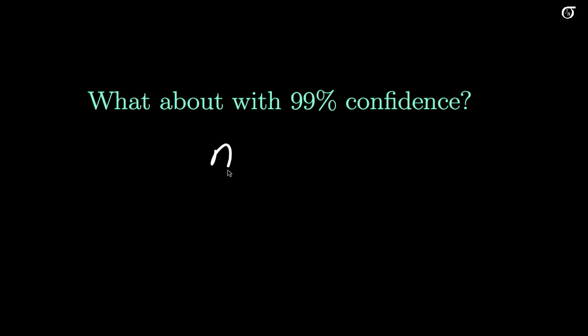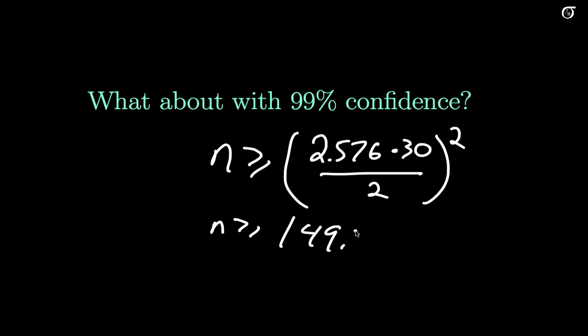What about 99% confidence? My n is going to be greater than or equal to, my z alpha over 2 for 99% confidence is 2.576. We multiply that by 30, divide by our m which is 2, square the whole thing, and I get n greater than or equal to 1493.05.